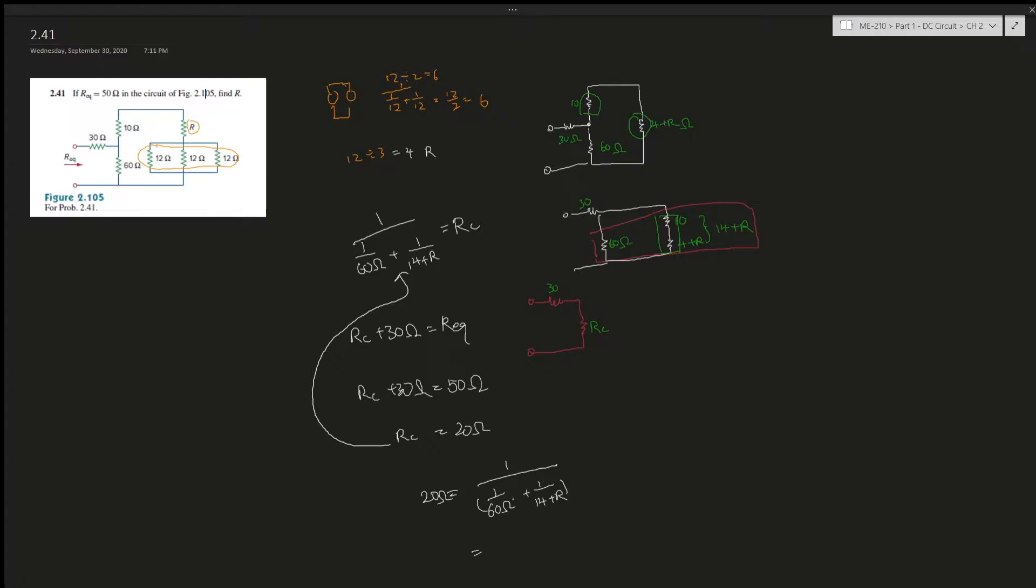And then RC, which is the representation of this whole function over here, which is 20 ohms, equals 1 over this whole thing. This is the denominator. So what we can do is, so A divided by B gives you C, or A divided by C is going to give you B. So now we can transfer this denominator to here, which is 1 over 20 ohms equals 1 over 60 plus 1 over 14 plus R.